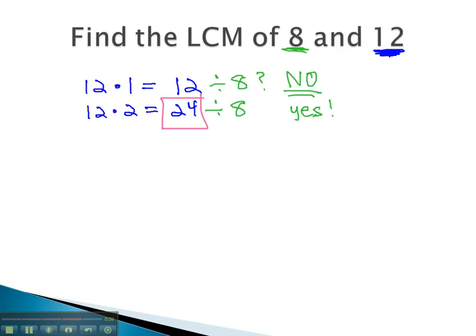So that's the mental math method we use to find the least common multiple. Start with the big number and find multiples and ask, can we divide that by the other number? Once we find the first number that we can divide by the other number, we have our least common multiple.